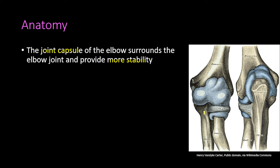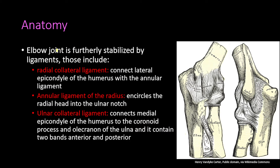The joint is covered by a joint capsule that surrounds the elbow and provides more stability. As you can see in these pictures, on the left we have an anterior view and on the right a posterior view of the elbow joint showing the elbow capsule, which adds further stability to the joint.